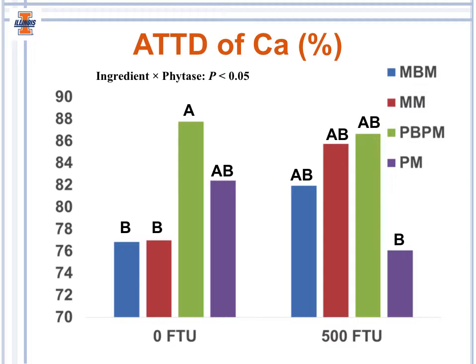To set up the results slides: the blue bar indicates the diet containing meat and bone meal, the red bar indicates meat meal, the green bar indicates poultry byproduct meal, and the purple bar indicates poultry meal. Across the x-axis, I've displayed results both in the absence of phytase and with the addition of 500 units of microbial phytase.